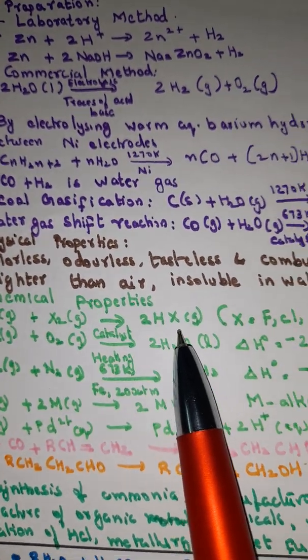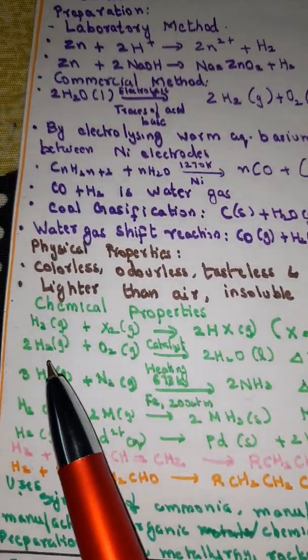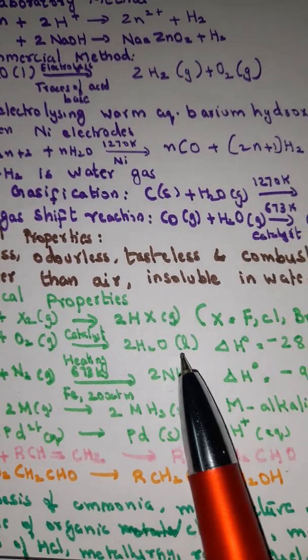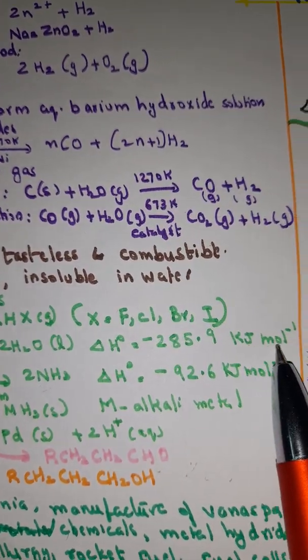Chemical properties - various equations are given. H2 + X2 gives 2HX, where X is fluorine, chlorine, bromine, iodine, etc.